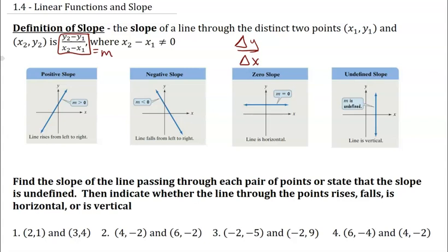It doesn't really matter which one is x1, y1, and which point is x2, y2. You just need to be consistent so that the two numbers on top of each other come from the same ordered pair. The condition x2 minus x1 does not equal zero is included because if x2 and x1 are the same point, we have two points on top of each other, giving us an undefined slope because it's a vertical line.